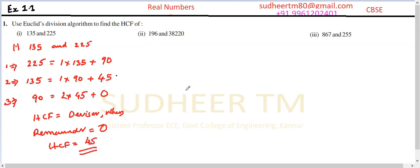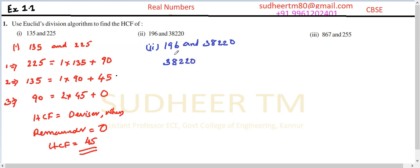Case 2: the numbers are 196 and 38220. The largest is 38220. Dividing 38220 by 196, we get 195 × 196 + 0. The remainder is 0 in the very first division, so the divisor is 196. Therefore HCF is equal to 196.